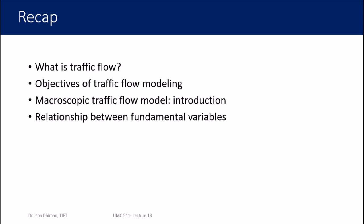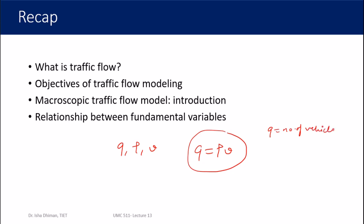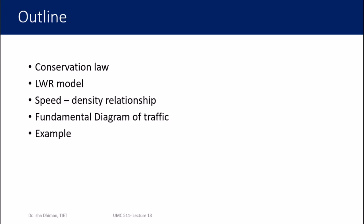We also derived the relationship between fundamental variables. We had three fundamental variables: q, rho, and v. The relationship derived using dimensional analysis was that the flow rate equals density times speed. The flow rate q is the number of vehicles passing a particular point per unit time, while density rho is the number of vehicles between two particular points on a road or highway at a given time.